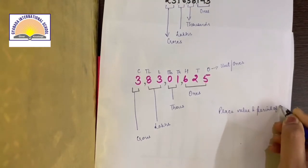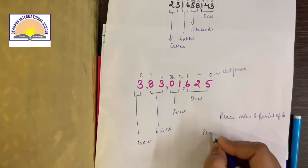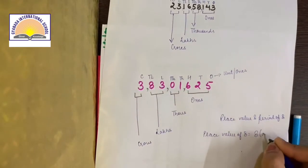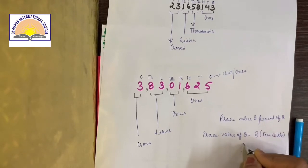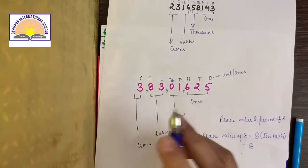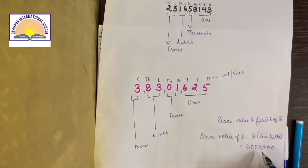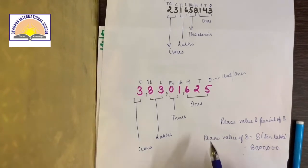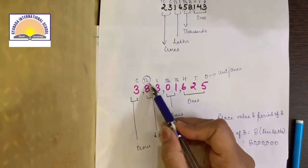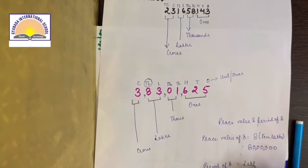Suppose this is the question. In this number, you have to find the place value and period of eight. Then I will say the place value of eight is, what is the place value of eight? It is ten lakhs. It is eight, ten lakhs. Or I can write it as eight. Count how many digits are after eight? One, two, three, four, five, six. Then put six zeros. One, two, three, four, five, six. Kyunki ten lakh mein kitne zero hote hain? Six. This is the place value of eight, ten lakh. And what is the period of eight? Tell me ki kaunse group ko belong kar raha hai? Lakhs ko. So period of eight is Lakhs.